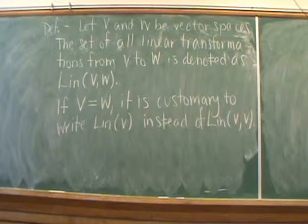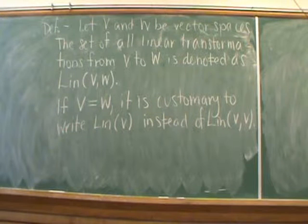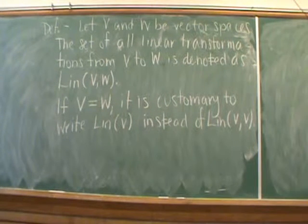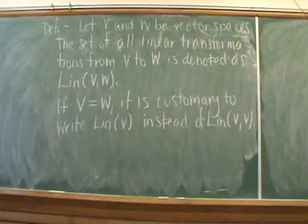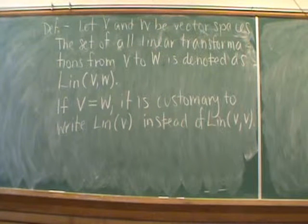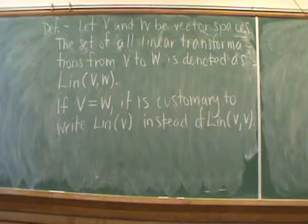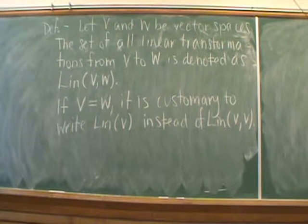If V and W are vector spaces, we're going to be considering the set of all linear transformations from V to W, and we're going to denote that as Lin(V, W). If V and W happen to be the same vector space, it's usually customary just to write Lin(V) instead of writing Lin(V, V).